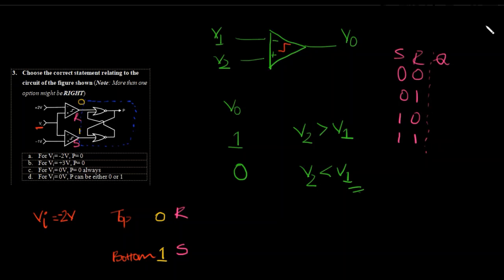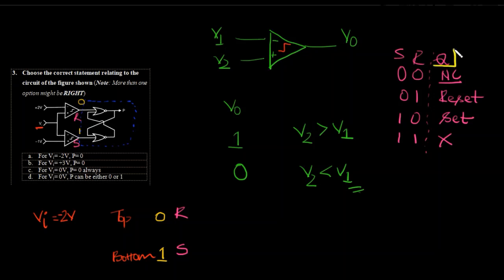If S and R equal 0, this is no change. If S equals 0, R equals 1 — it is reset. If S equals 1, R equals 0 — it is set. And 1,1 is undefined. Reset means Q becomes 0, set means Q becomes 1. Always keep in mind: the state of the flip-flop — set and reset — is spoken with respect to Q.